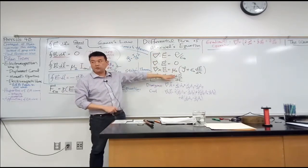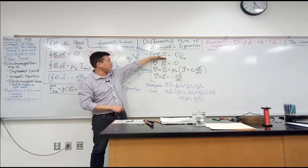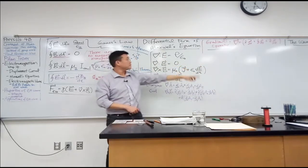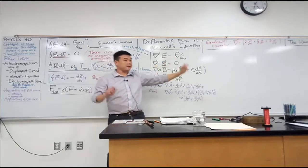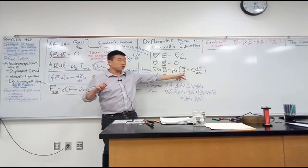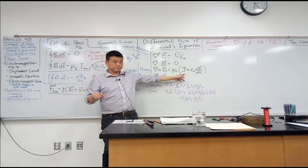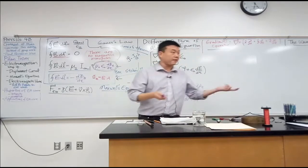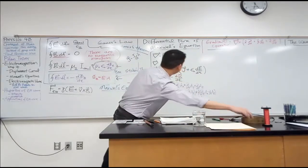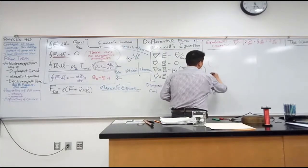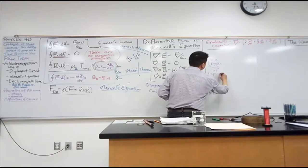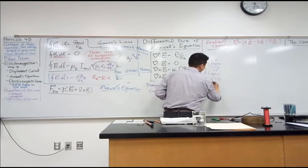One of the benefits of dealing with this differential form of Maxwell's equations is that these are all locally specified quantities — quantities I calculate at a particular point in space locally. If I can say that at this point in space there's no charge, then I can make charge density go to zero. If I can say there's no current, I can make current density go to zero. So I'm looking at a region of space with charge density equal to zero and current density equal to zero.